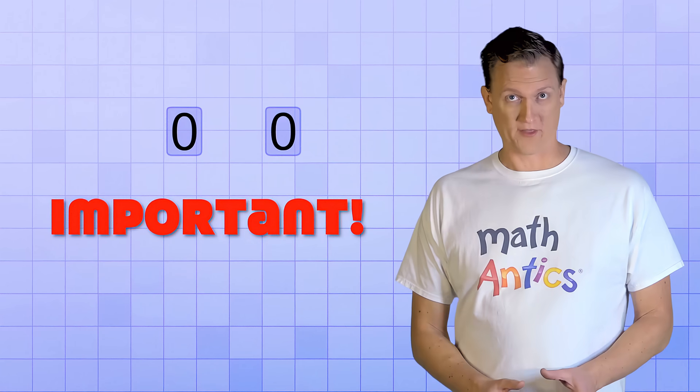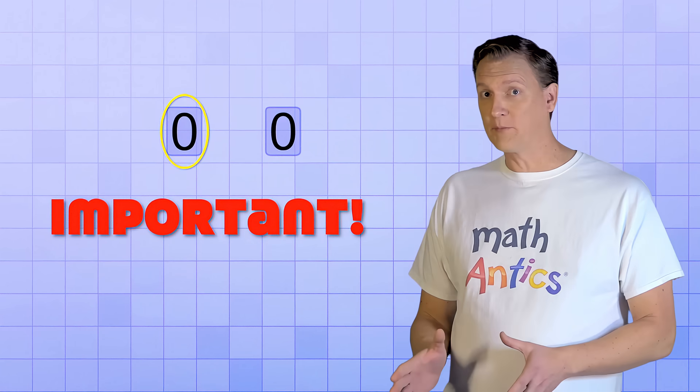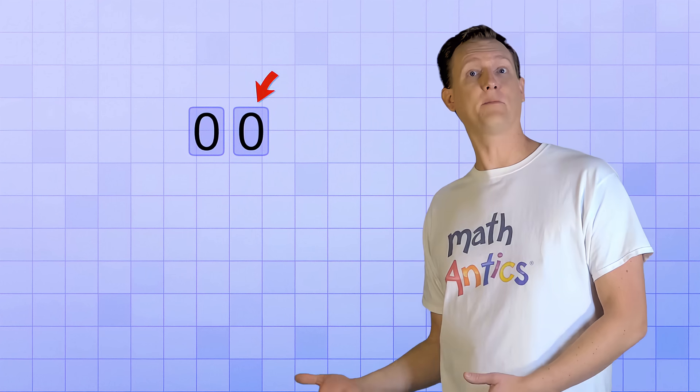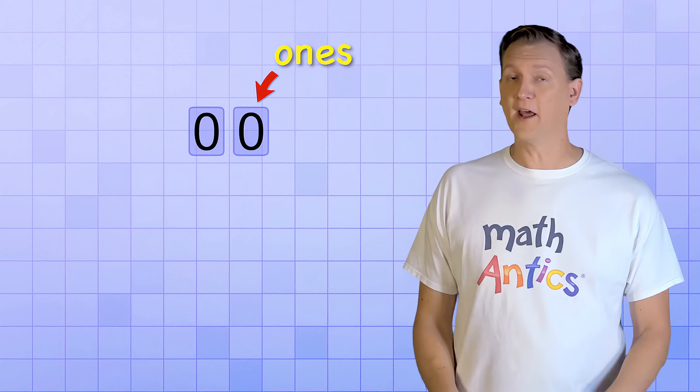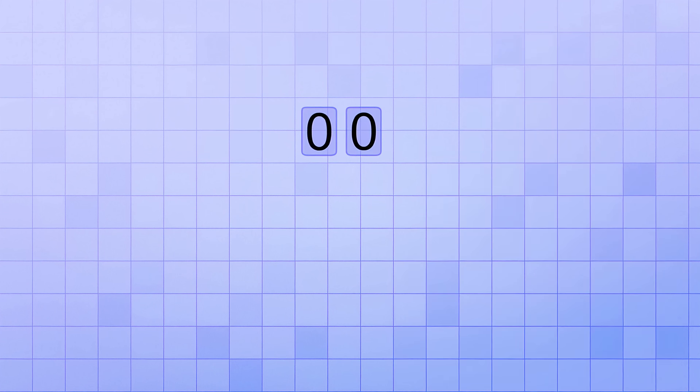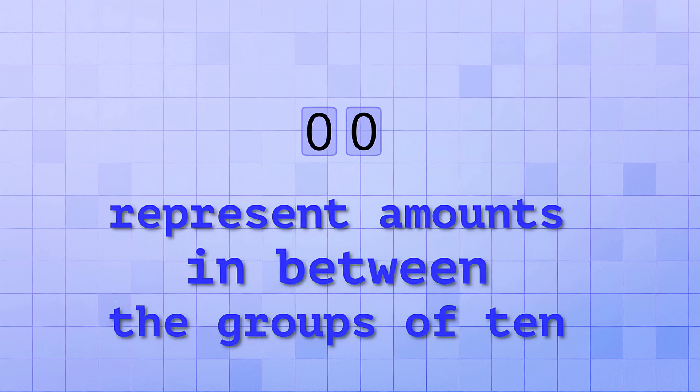And here's the really important thing. We're not going to use the new number place instead of the old one. We're going to use it alongside of the old one, so that we have one number place for counting by ones, and another number place for counting by tens. Using these two number places together lets us represent amounts that are in between the groups of 10.